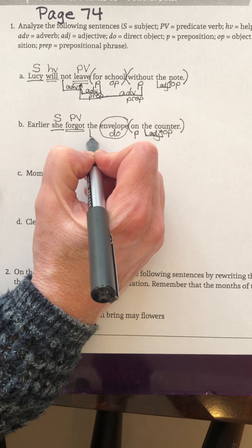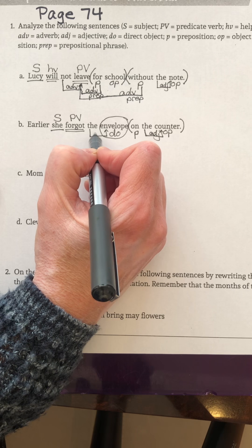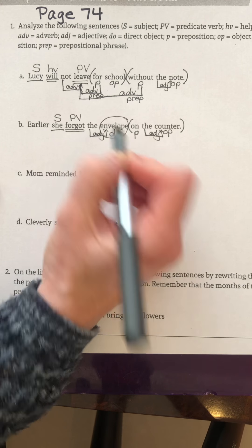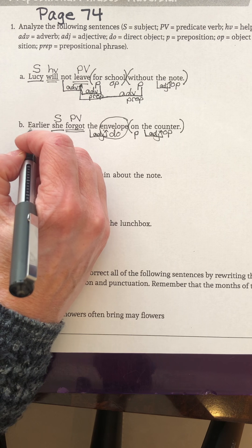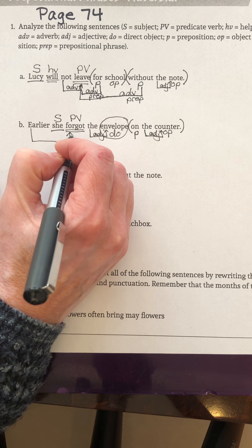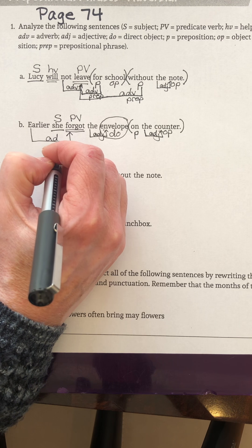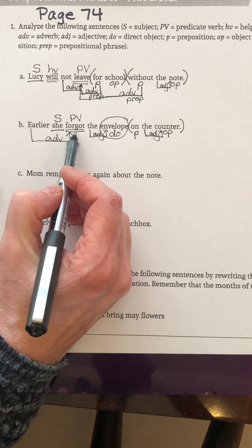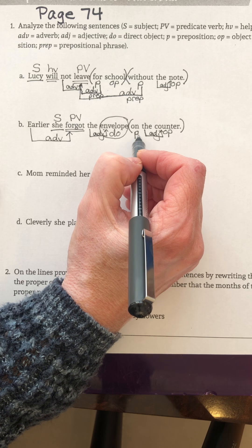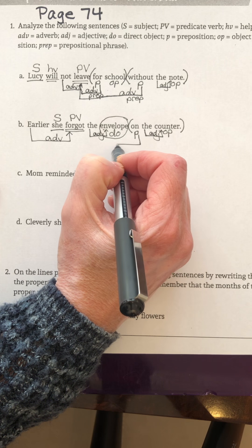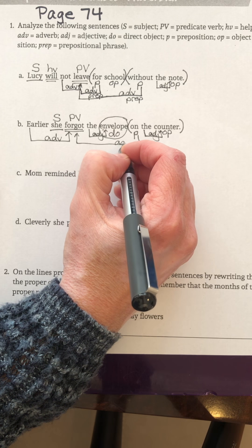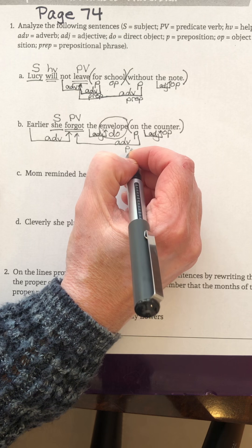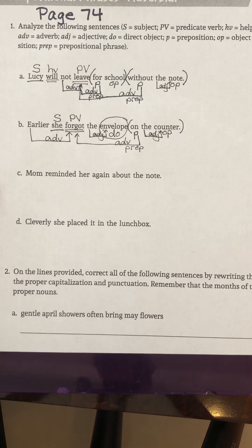Which envelope? The envelope. Adjective because it modifies the noun. Forgot when? Earlier — adverb because it modifies the verb. Forgot where? On the counter. This is an adverbial element because it modifies the verb and it is a prepositional phrase. So all of those little lines and letters need to be on your letter B. Double check that yours looks like mine.